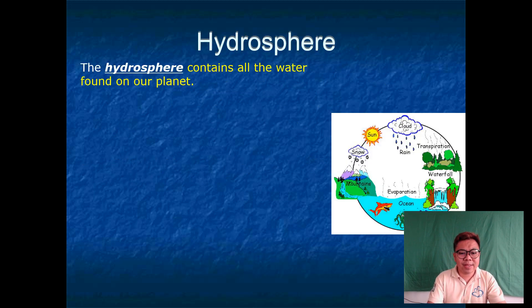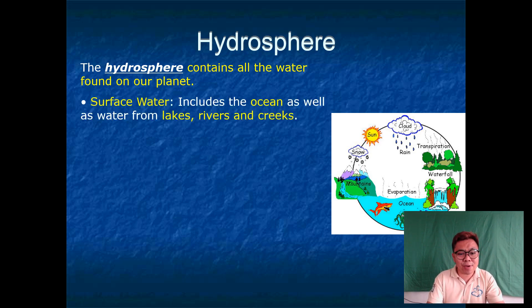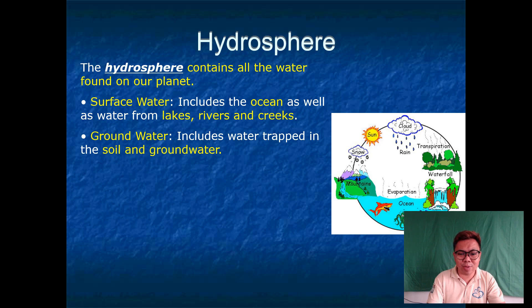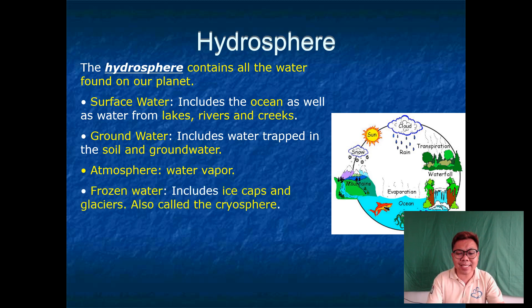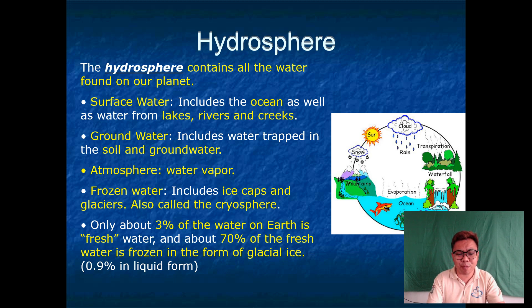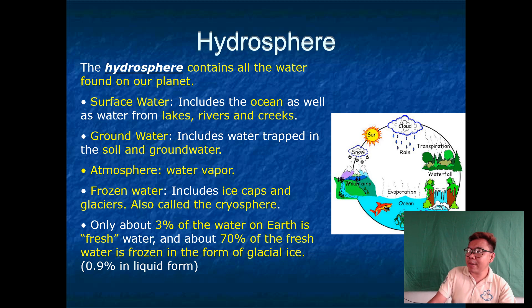Now let's have the hydrosphere. The hydrosphere contains all the water found on our planet — the region where water is what we are talking about. We have surface water, which includes the ocean as well as water from lakes, rivers, and creeks. Groundwater includes water trapped in the soil. The atmosphere also contains water vapor. Frozen water includes ice caps and glaciers, also called the cryosphere. Only about 3% of the water on Earth is fresh water, and 70% of that fresh water is frozen in the form of glacial ice, with 0.9% in liquid form. So about 97% is salt water.